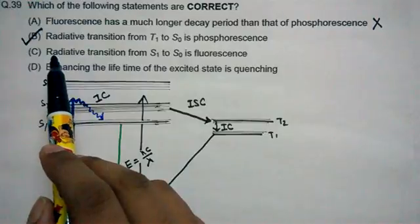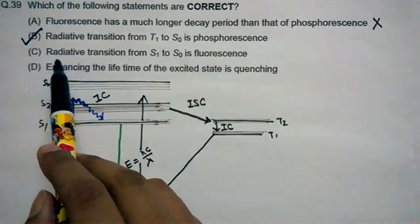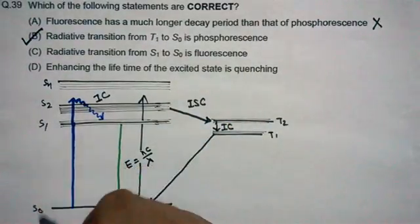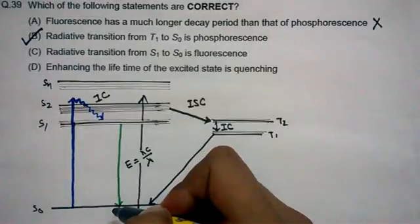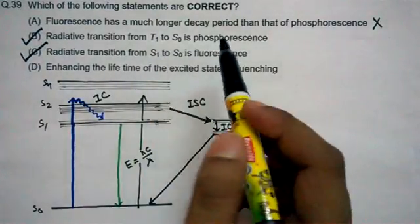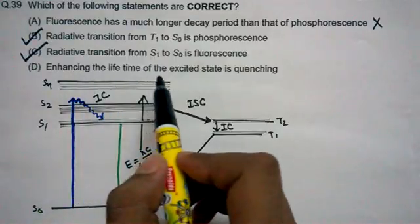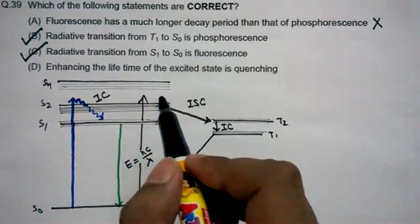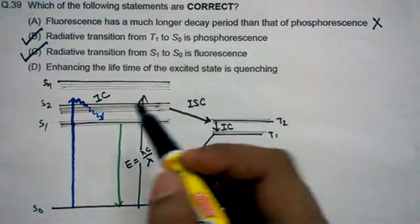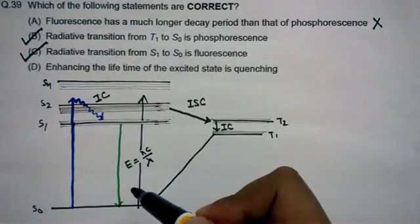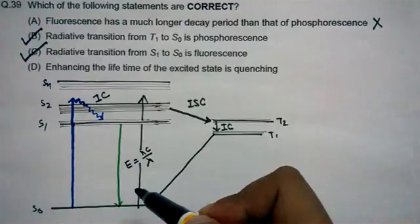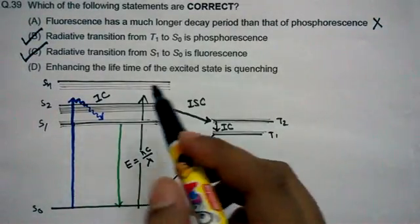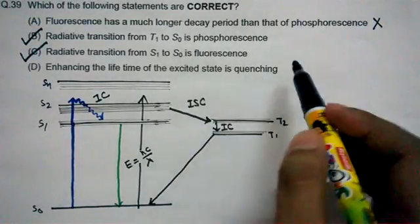This option is correct. Let's judge the second option. Radiative transition from S1 to S0 is fluorescence. Yeah, you can see from S1 to S0, the radiative transition is called fluorescence. So it would be actually correct. And the last one is enhancing the lifetime of excited state is quenching. Now quenching is a totally different phenomenon. Quenching is somewhat like using the excitation spectra of one fluorophore by another fluorophore. Another fluorophore is using that emission spectra of a particular fluorophore as its excitation spectra. So this option is still incorrect. It's an incorrect option.